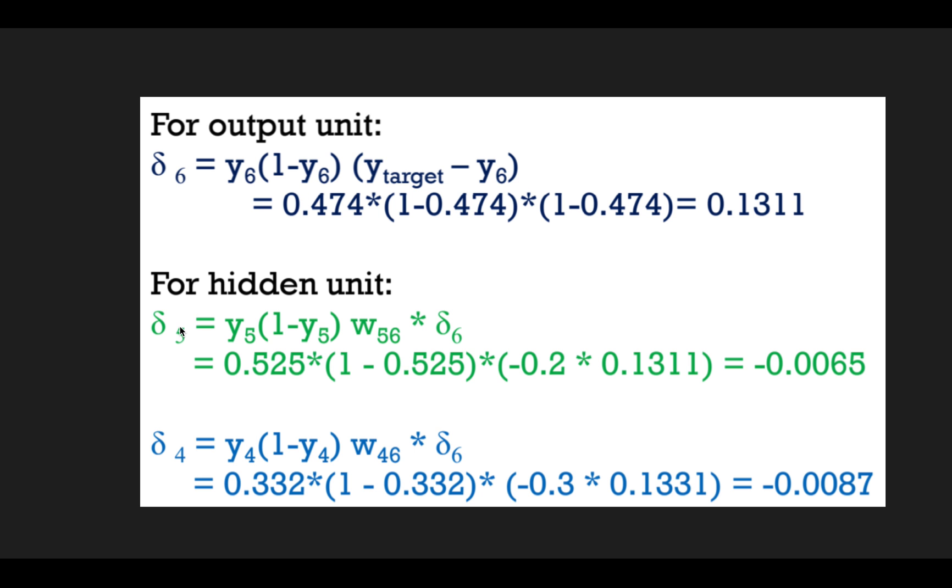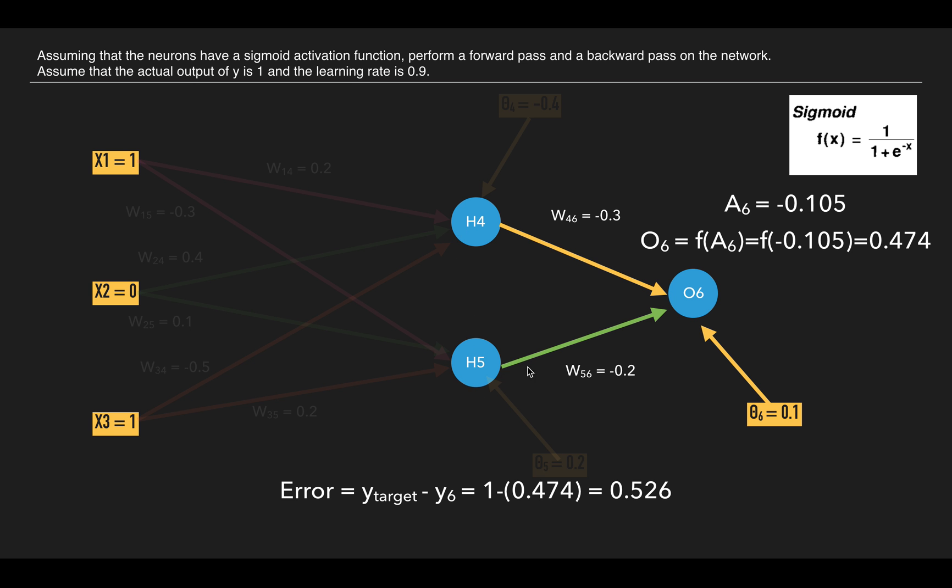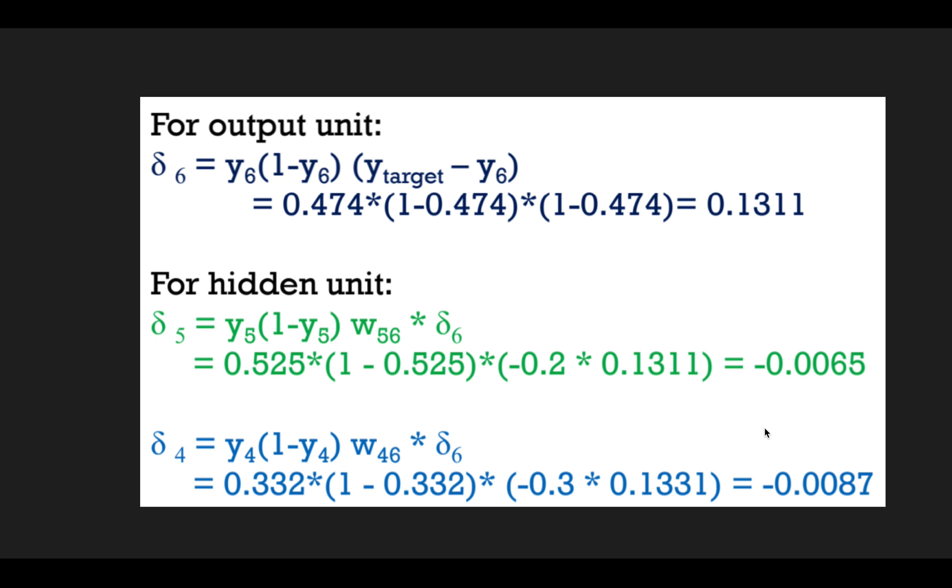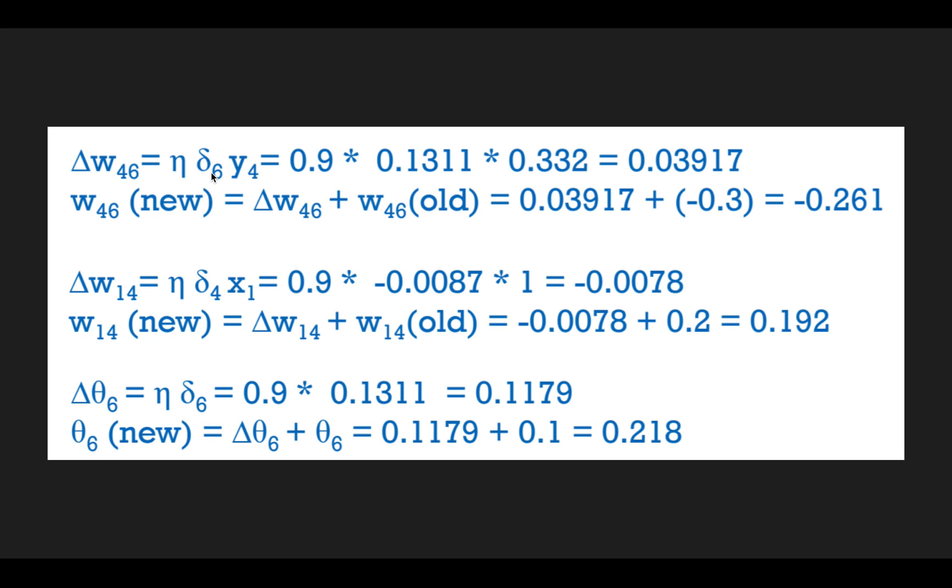For the hidden units we can use the formula previously shown. So we get the delta_6, delta_5, and delta_4. These three are the nodes which we need the delta for. After that we can calculate our delta w.